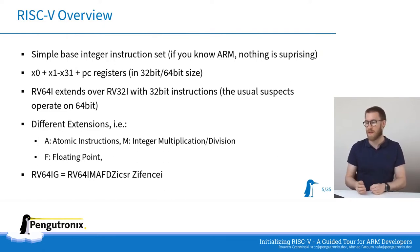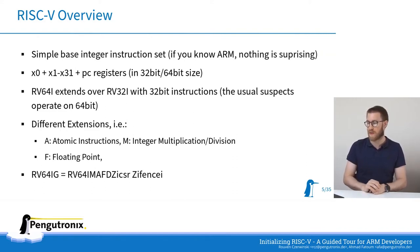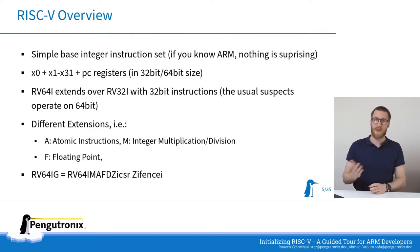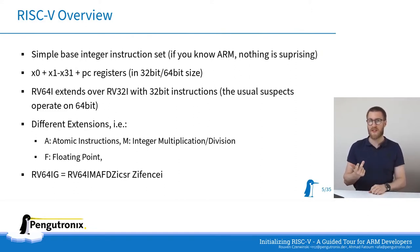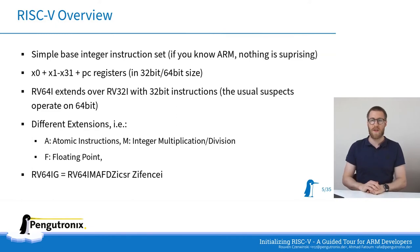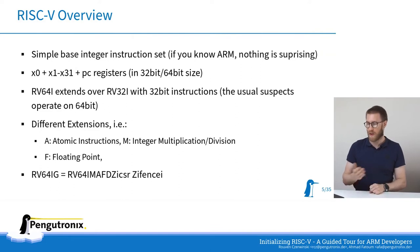There are also different extensions: an extension for atomic instructions, extensions for integer multiplication and division, floating point, double floating point, and the control and status register. For our Linux-targeted use case we want RV64I where the general set expands to integer, multiplication, atomics, floating point, double floating point, control and status register, and instruction fence instructions. On most systems capable of running Linux, either 32-bit or 64-bit, you will have all these extensions available and the kernel does use them.